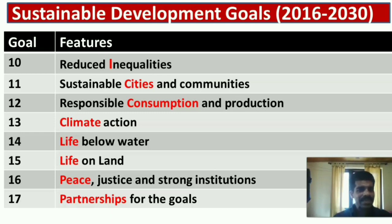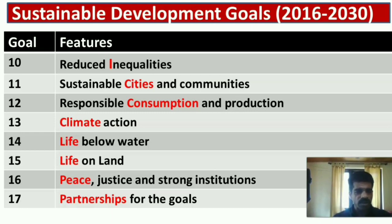3C stands for Cities, Consumption, and Climate — that is Goal 11: Sustainable Cities and Communities; Goal 12: Responsible Consumption and Production; Goal 13: Climate Action. 2L stands for Life Below Water (Goal 14) and Life on Land (Goal 15). 2P stands for Peace and Partnership — Goal 16: Peace, Justice and Strong Institutions; Goal 17: Partnerships for the Goals.